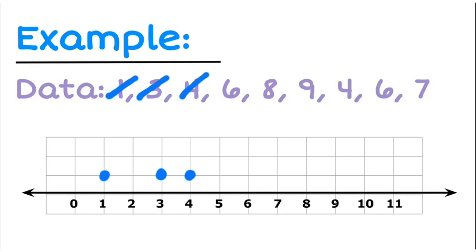8 is the next one. 9 is another one. Now I've got another 4, so what I'm going to do now is stack that on top. 6, again, stack it on top. And I've got my value there of 7.